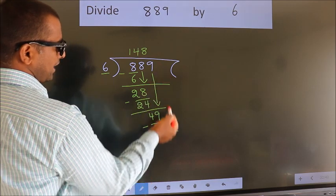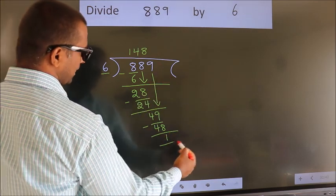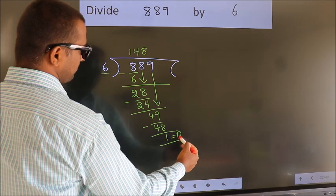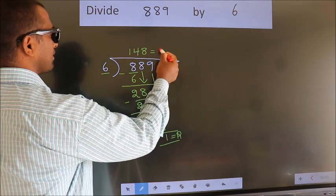No more numbers to bring down, so we stop here. This is our remainder. This is our quotient.